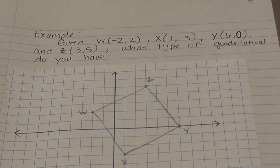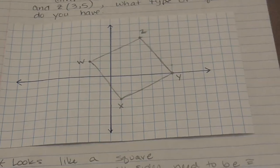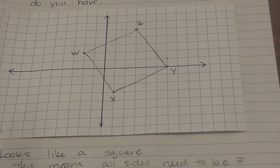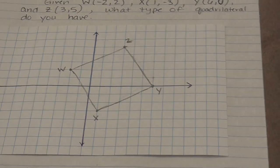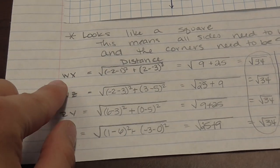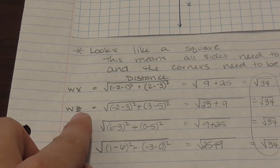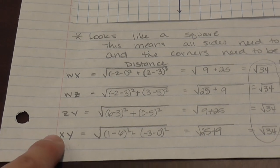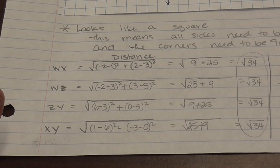In the next example, point W is at negative 2, 2; X at 1, negative 3; Y at 6, 0; and Z at 3, 5. After plotting and connecting the dots, it looks like it could be a square. Using the distance formula on all four sides — WX, WZ, ZY, and XY — each gives the square root of 34. Since all four sides are the same length, we have at least a rhombus.